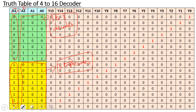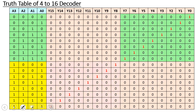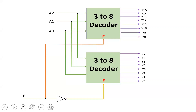In the block diagram, we have two 3-to-8 decoders. The 3 common inputs are a2, a1, and a0, going into both decoders. The enable signal for the first decoder is when a3 is equal to 0, and for the second decoder when a3 is equal to 1. When enable is 0, the first decoder is activated; when enable is 1, the second decoder is activated.